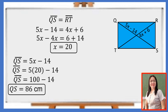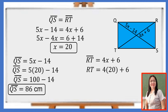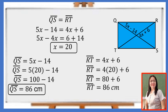Now let us check the congruency of the diagonals by finding RT. Substituting X equals 20 into 4X plus 6: 4 times 20 is 80, plus 6 is 86. So, the diagonals QS and RT are both 86 centimeters long, confirming they are congruent.